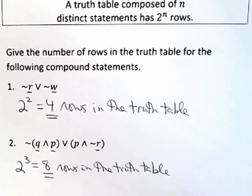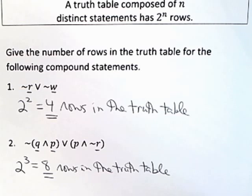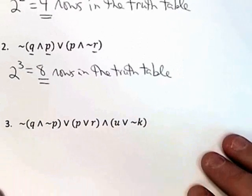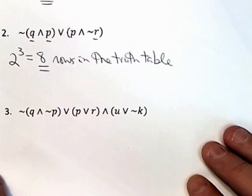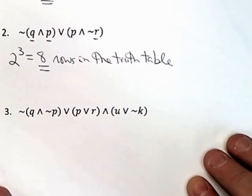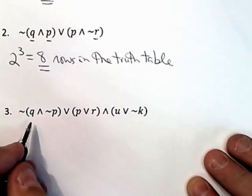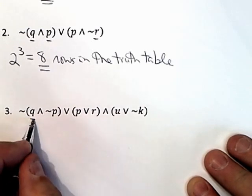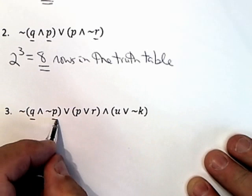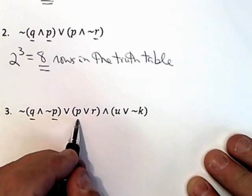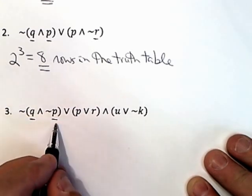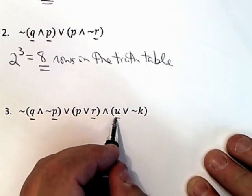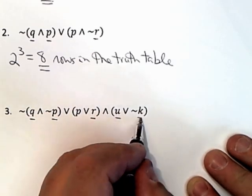By this time you have the idea, but let's do one more example. Suppose we have this. Again, the idea is to count the number of distinct statements. You just look - there's a q, that's one. There's a p, that's two. You've already counted it, so you don't count it twice. There's an r, that takes you to three. There's a u, that takes you to four. And there's a k, that takes you to five.